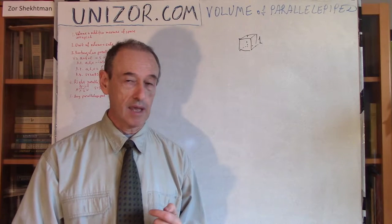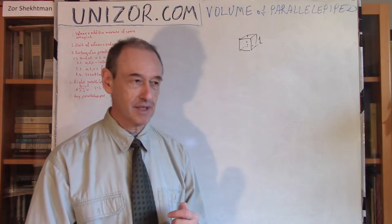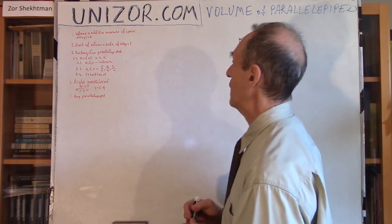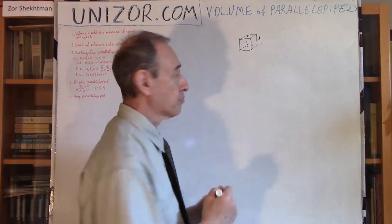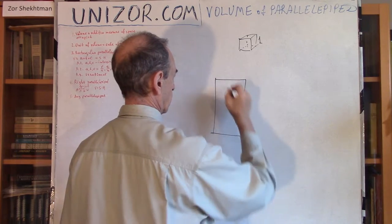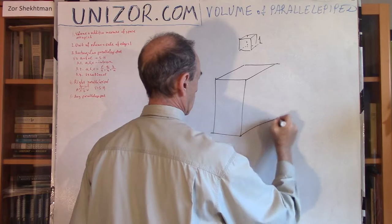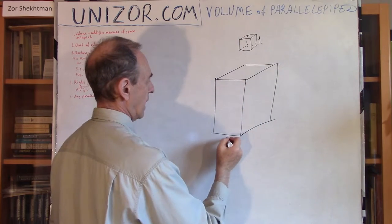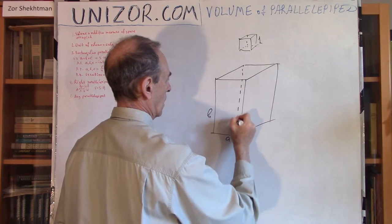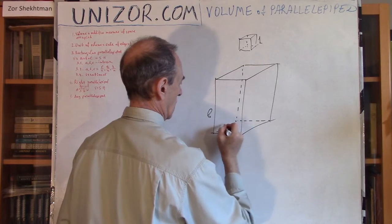That's easy to say, but it's not that easy to demonstrate, and here is why. Let's consider the first example. We have a rectangular parallelepiped with sides A, B, and C.